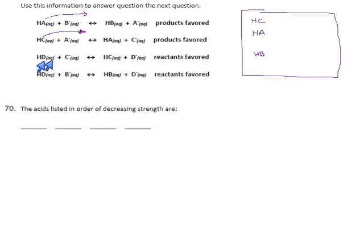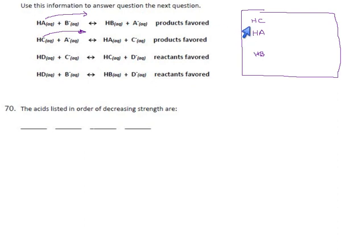Now D and C fight, and we have a problem because the reactants are favored. What does that mean? It means C is stronger than D — it's able to force the reaction in this direction away from itself. That means D is stronger than C, but that means it could go here or here or here. So this is not all that helpful. I'm just going to put a star next to that one and come back to it if we have to.